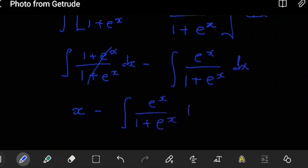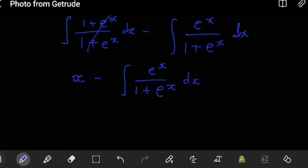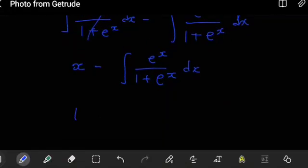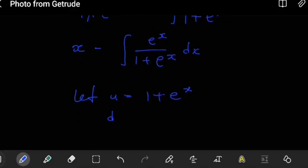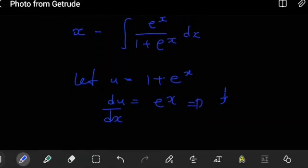To work out this integral we're going to now use u substitution. So let u be equals to 1 plus e to the x. So of course we see that du will be equals to, du dx that is, this will be equals to literally just e to the x. Of course this implies that dx will be equals to du over e to the x.